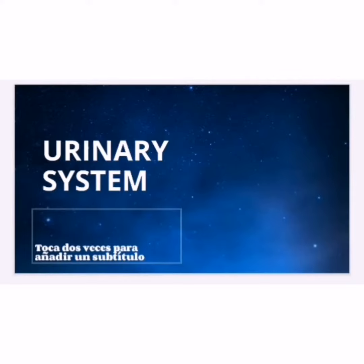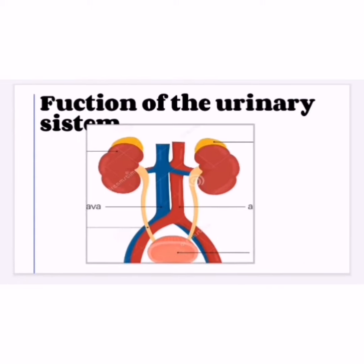Good morning. I'm going to tell you about the urinary system. The function of the urinary system — the human urinary system — is a set of organs responsible for the production and storage and expulsion of urine. Nitrogenous waste from metabolism and other toxic substances are removed from the body through urination.